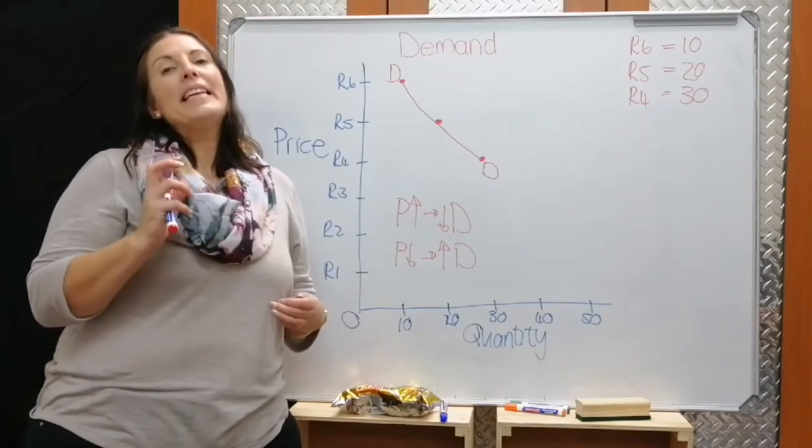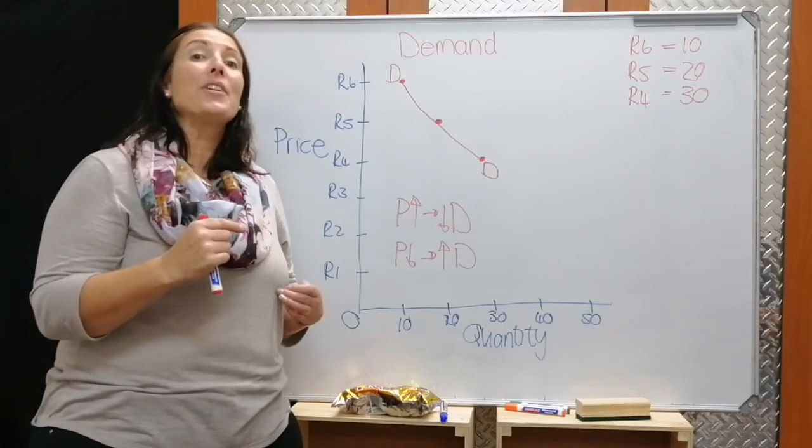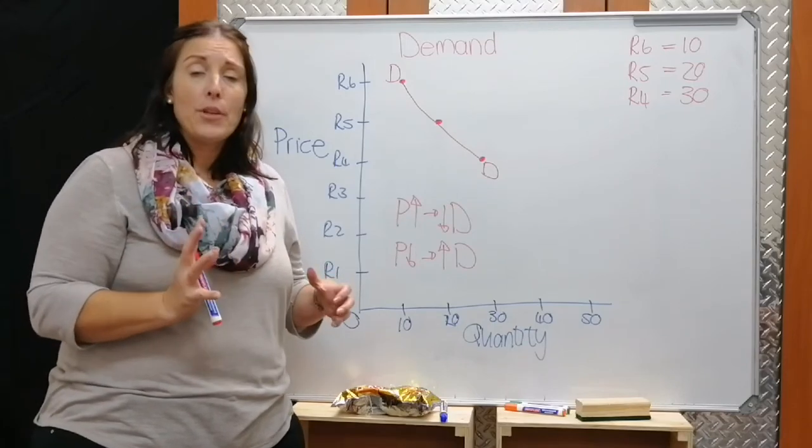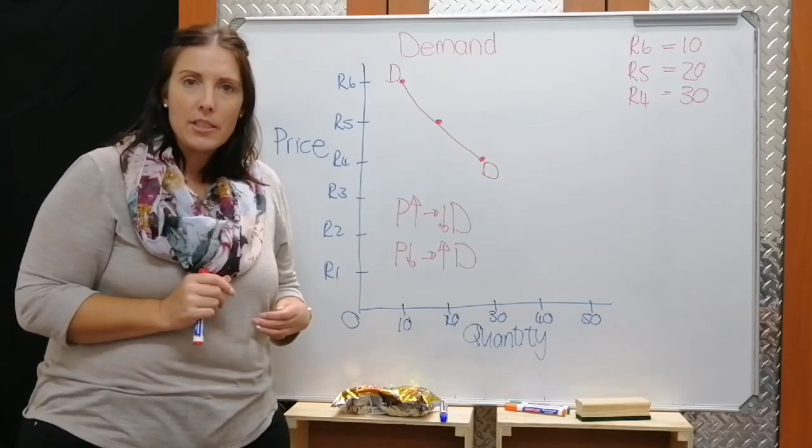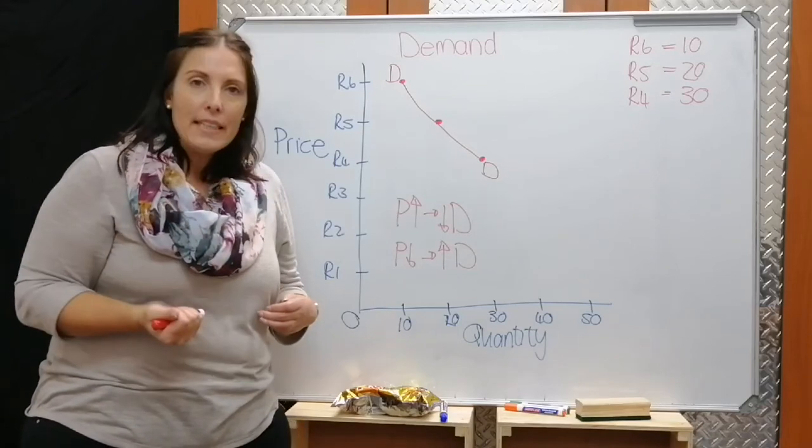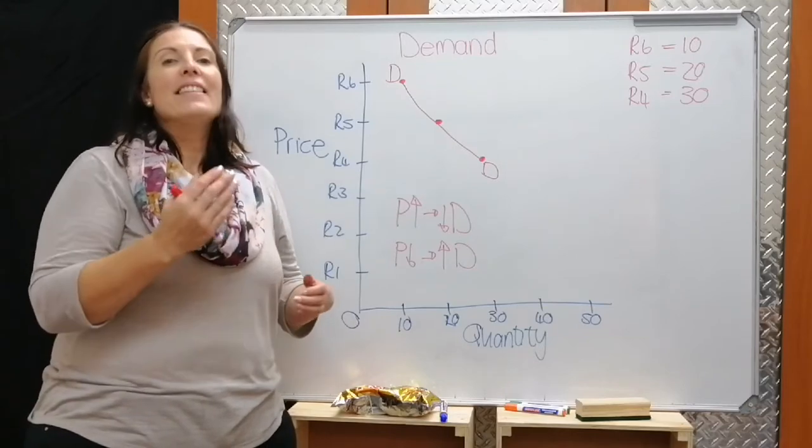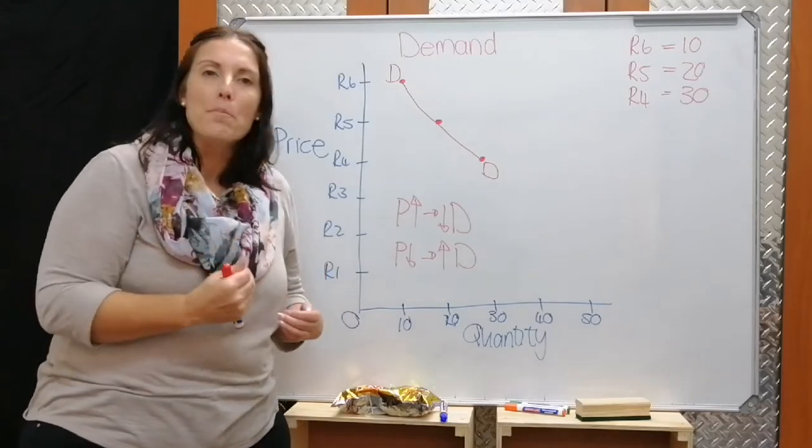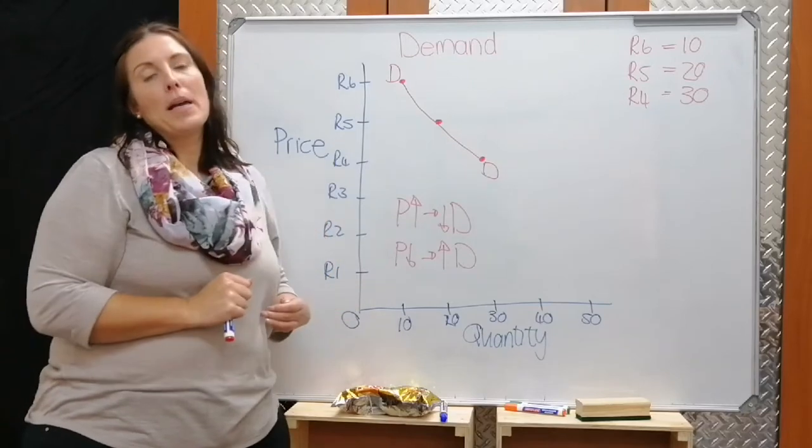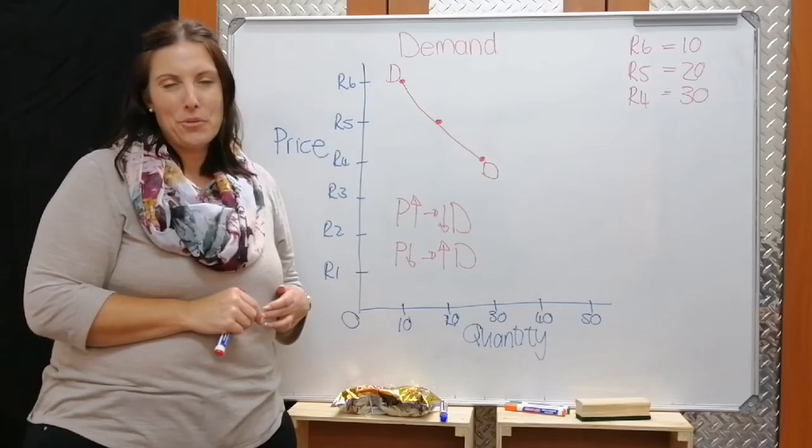The last one is if consumers have an expectation that something might happen to the price of that product in the future, not now, but in the future. For that example, we can use the Johannesburg Securities Exchange. Lots of people predict that the price of a specific share might increase or decrease in the future, and therefore they will buy or not buy a specific share. That can influence the quantity demanded. Nothing to do with the current price. It might stay exactly the same, but the consumer might prefer to either buy now, more or less, depending on what they foresee for the future.